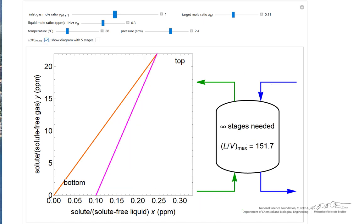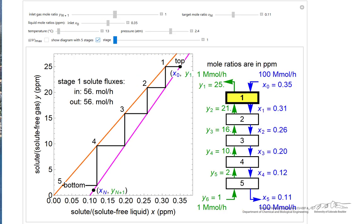We can check this box and it shows the maximum L over V. At this value, it takes an infinite number of stages. We can check this box and now it displays a system with five stages, but it shows the concentrations leaving each stage, the mole ratios leaving each stage.